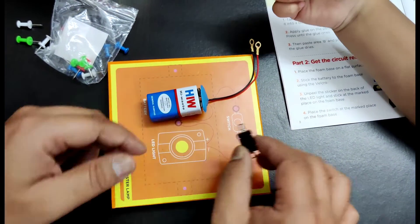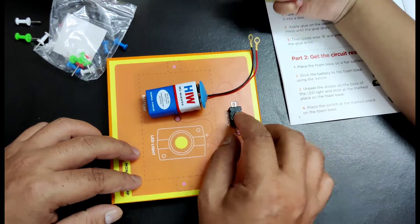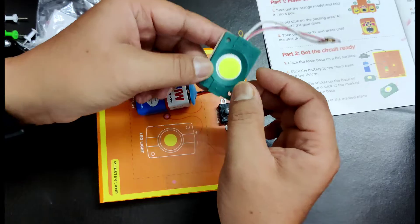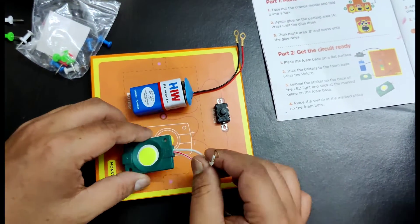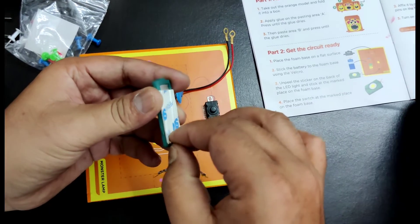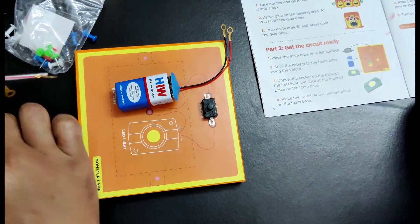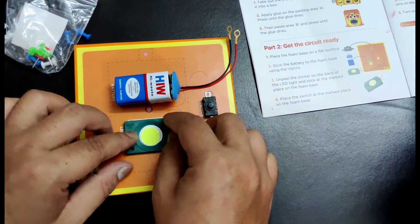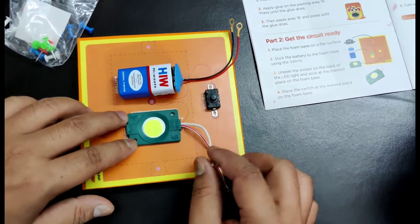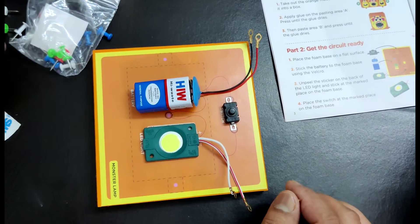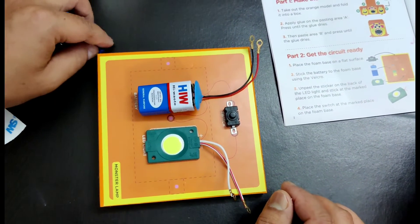All right, and we need... this is our LED light, so it's in its place over here. Okay, so first we have to take out this tape and paste it here on its place. Okay, so now let's connect the wires.